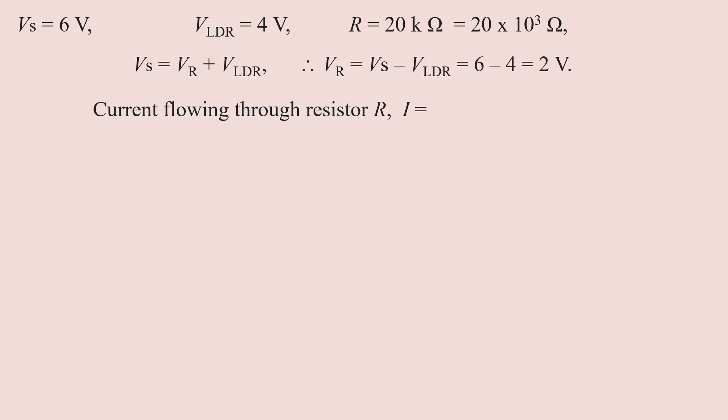The current I is equal to V_R divided by R. Using the fixed resistor value of 20 × 10³ ohms, the current through the circuit is 0.1 × 10⁻³ amperes.